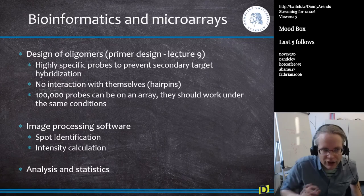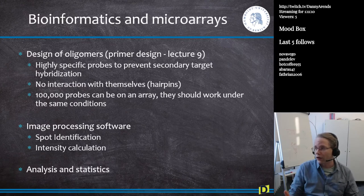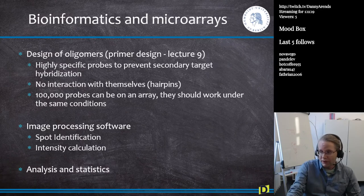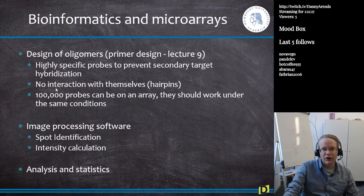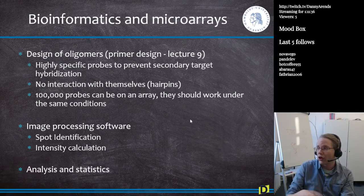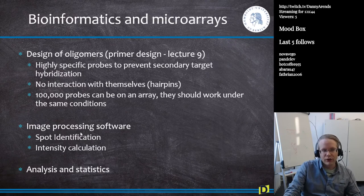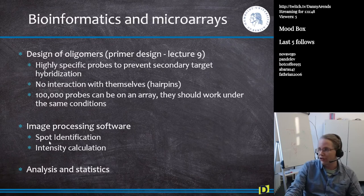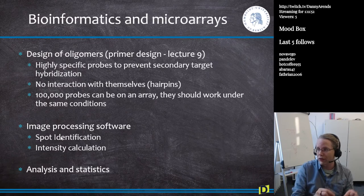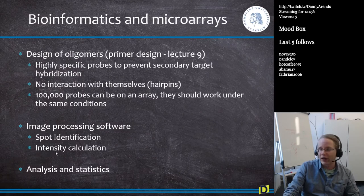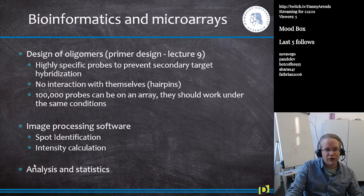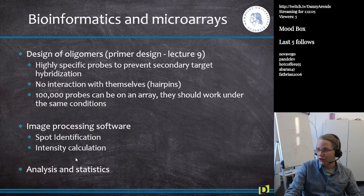Bioinformatics is involved throughout. When you design the oligomers on the microarray, the same rules for primer design affect oligo design for microarrays. We want highly specific probes to prevent secondary targets; these probes are not allowed to create hairpins; and since there are 100,000 or more probes on an array, they should all work under the same conditions. It's a much harder task compared to just designing two primers for a PCR reaction. Bioinformatics is also involved in image processing software — spot identification, intensity calculation, and statistical analysis of microarray data.